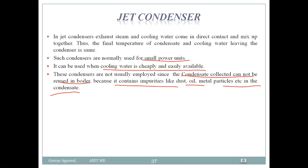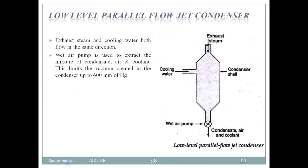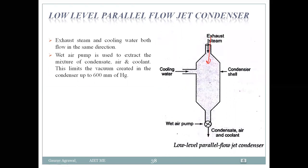Now let's look at the classification of jet condensers. The first type is the low level parallel flow jet condenser. In this condenser, the exhaust steam enters from one side and the cooling water also enters from the same side, meaning both flow in the same direction — this is the parallel flow arrangement.